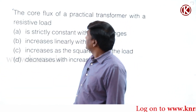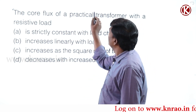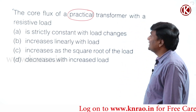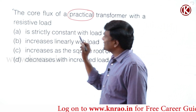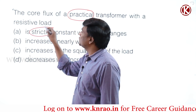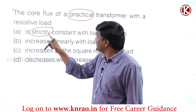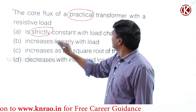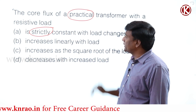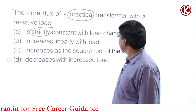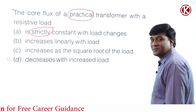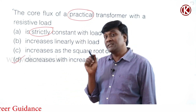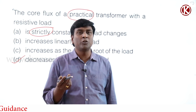Now here is a GATE exam question: 'The core flux of a practical transformer with a resistive load.' The options include: is strictly constant with load changes; increases linearly with load; increases as the square root of the load; decreases with increased load. The answer should be 'decreases with increased load,' because with a resistive load, voltage regulation is going to be positive.